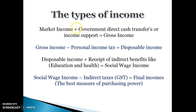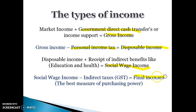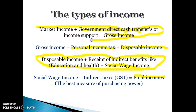To summarise the types of income: market income plus government direct cash transfers gives gross income. Gross income minus personal income tax gives disposable income. Disposable income plus indirect non-cash benefits from the government gives social wage income. Social wage income minus indirect taxes gives final income, which is the most quoted measure of purchasing power. Market income is the most inequitable, and social wage income is the most equitable.